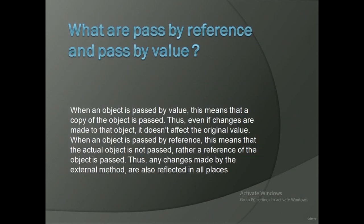What are pass by reference and pass by value? When an object is passed by value, a copy of the object is passed; thus, even if changes are made to that object, it doesn't affect the original value. When an object is passed by reference, the actual object is not passed; rather, a reference of the object is passed. Thus, any changes made by the external method are also reflected in all places.